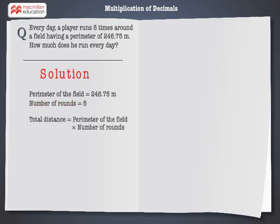To find out how much the player runs a day, we have to multiply the perimeter of the field by the number of rounds he runs, which is equal to 246.75 multiplied by 5, which is equal to 1,233.75 meters.